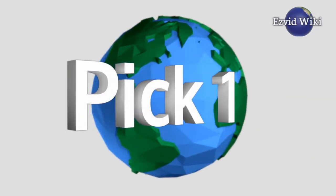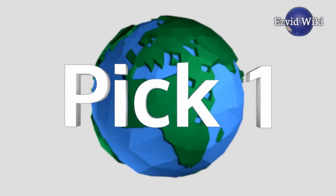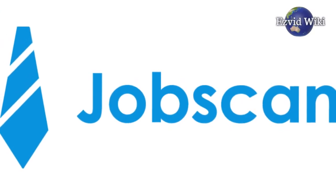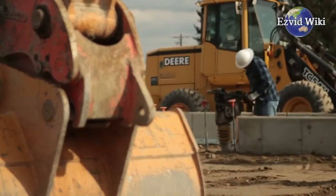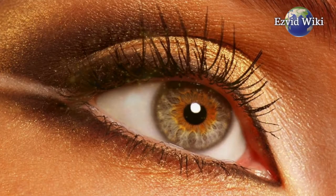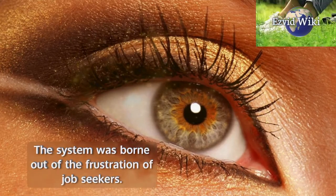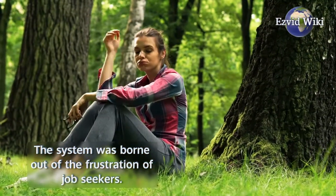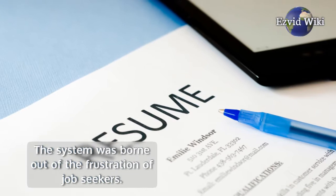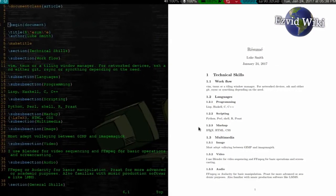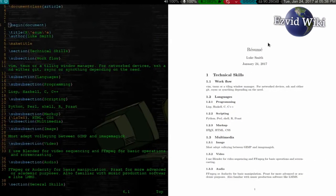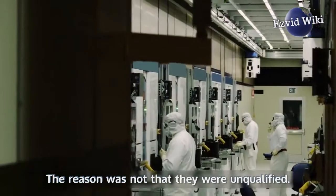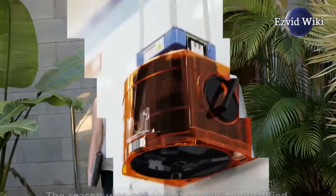Pick number one. In the first position in our wiki is Jobscan. Jobscan offers a sleek platform to help you get your job applications seen by hiring managers. The system was born out of the frustration of job seekers. Many felt that their well-crafted resumes were not getting seen by the right people. The reason was not that they were unqualified. Instead, it was the technology-driven approach used by many employers.